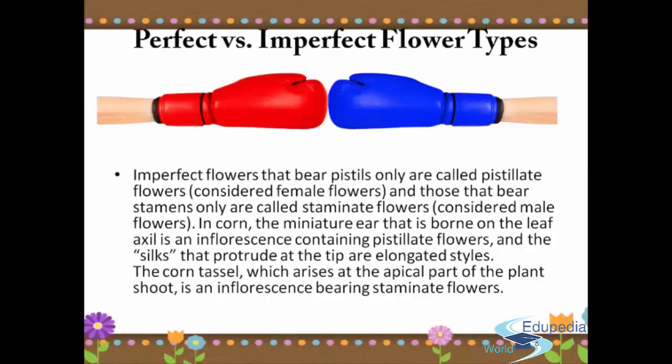Consider also the structure of flowers in corn. The miniature ear that is born on the leaf axil is an inflorescence containing pistillate flowers, and the silk — the first root of the kernel — are elongated styles. The corn tassel, which arises from the apical part of the plant, is an inflorescence bearing staminate flowers.